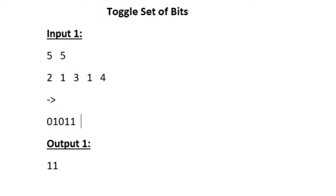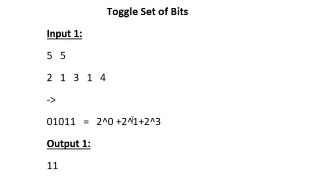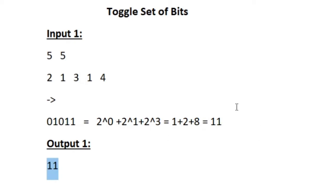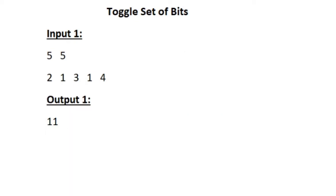To find the decimal equivalent we convert this binary into decimal. Wherever the bit is 1 we add the corresponding power of 2. Iterating from last, at indices 0, 1, and 3 the bits are 1, so we add 2^0, 2^1, and 2^3. At the remaining indices the bit is 0. So 2^0 is 1, 2^1 is 2, and 2^3 is 8 — adding all these gives 1 + 2 + 8 = 11. In our output we are also printing 11, which is the decimal value for the given binary.